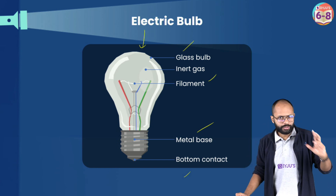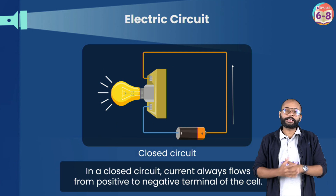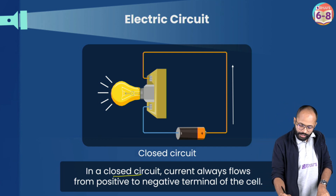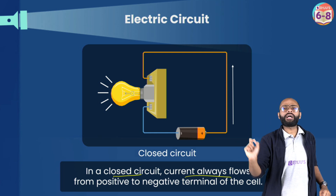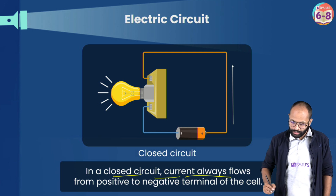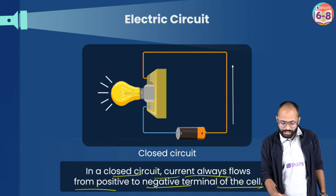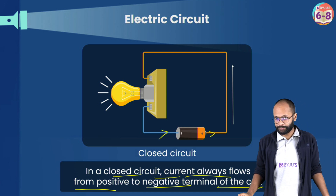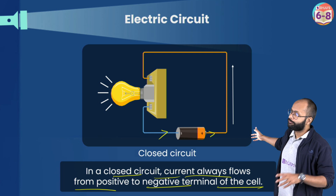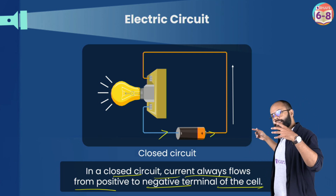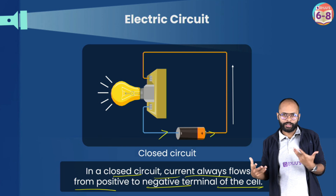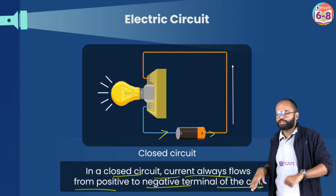Now comes the electric circuit. Electric current doesn't flow just anywhere — it needs a closed path. An electric circuit is a closed path through which current can flow. Current can never flow through an open path. In a closed circuit, current always flows from the positive to the negative terminal of the cell. This is conventional current — in reality electrons flow from negative to positive.